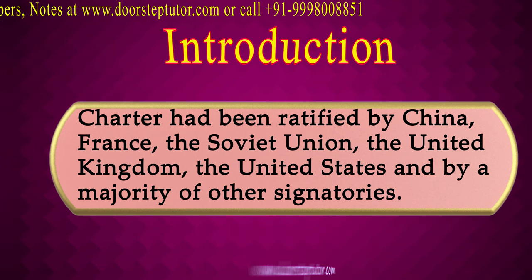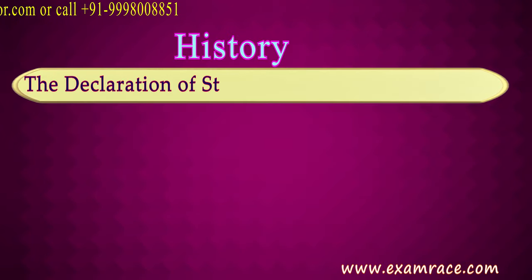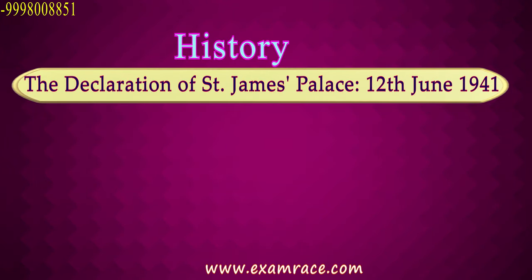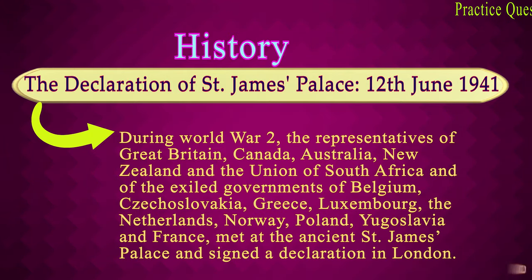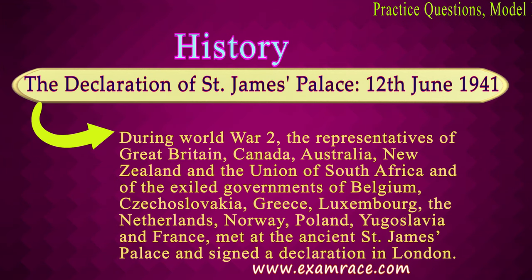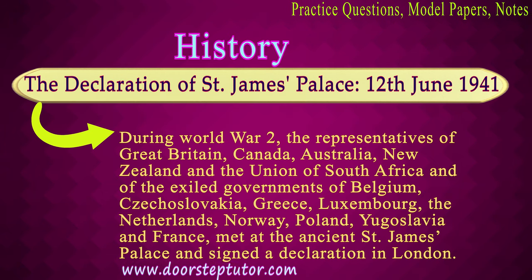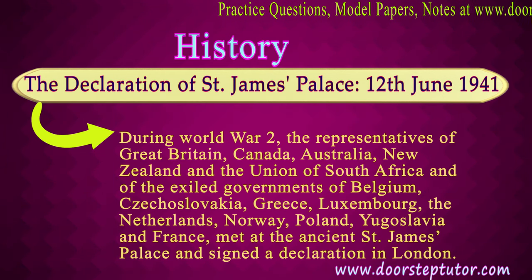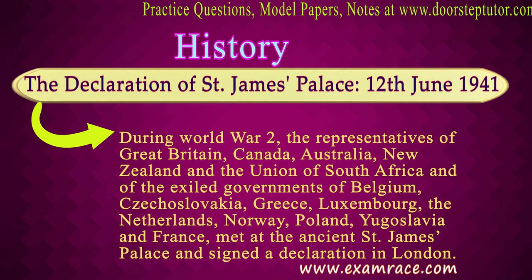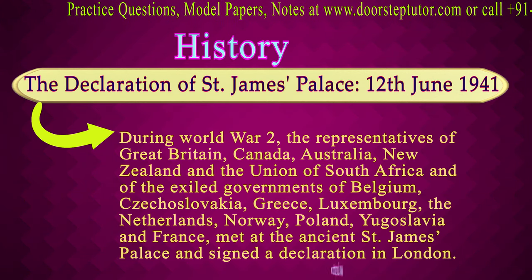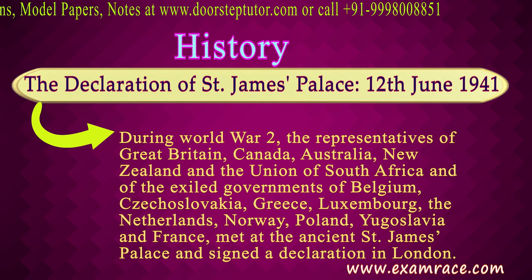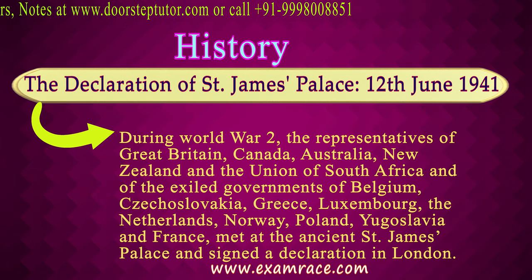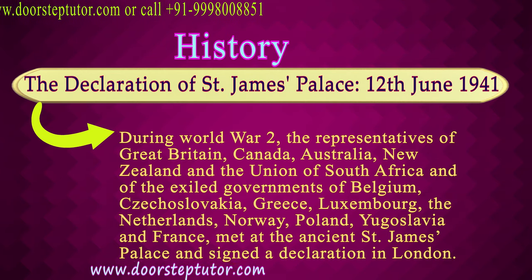The very first declaration in the creation of the United Nations was the Declaration of St. James Palace on 12th June 1941. During World War Two, all the Allied powers along with other nations pledged to stand together against the Axis powers. Great Britain, Canada, Australia, New Zealand, South Africa, and the exiled governments of Belgium, Czechoslovakia, Greece, Luxembourg, the Netherlands, Norway, Poland, and France met at St. James Palace and signed the declaration in London.